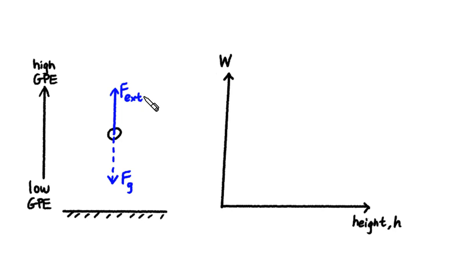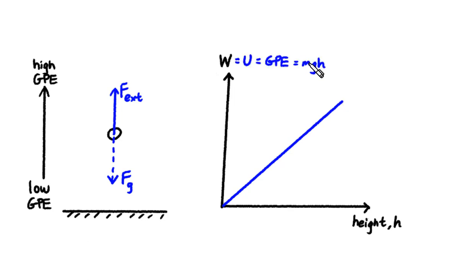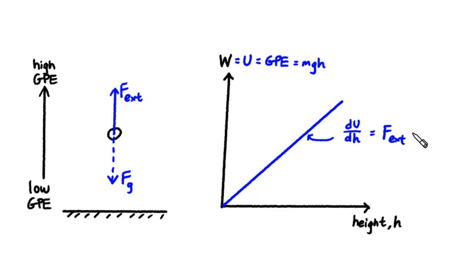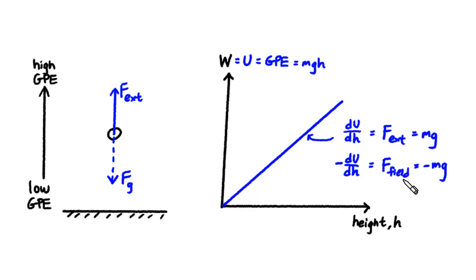Since it's a constant external force, it's going to do work at a constant rate. So the GPE graph, when plotted against height H, is going to be a straight line graph. The gradient of this graph — the energy gradient — corresponds to the external force, which equals mg. And the negative of the energy gradient corresponds to the field force, the gravitational pull, which is also mg. The negative sign is just telling us that the gravitational pull is downward.